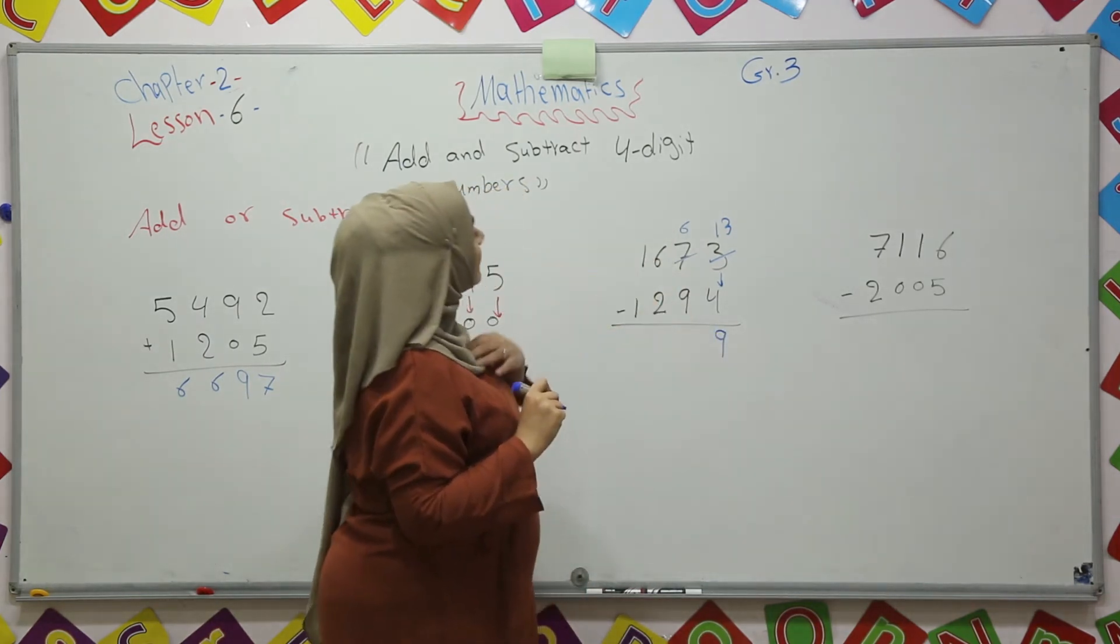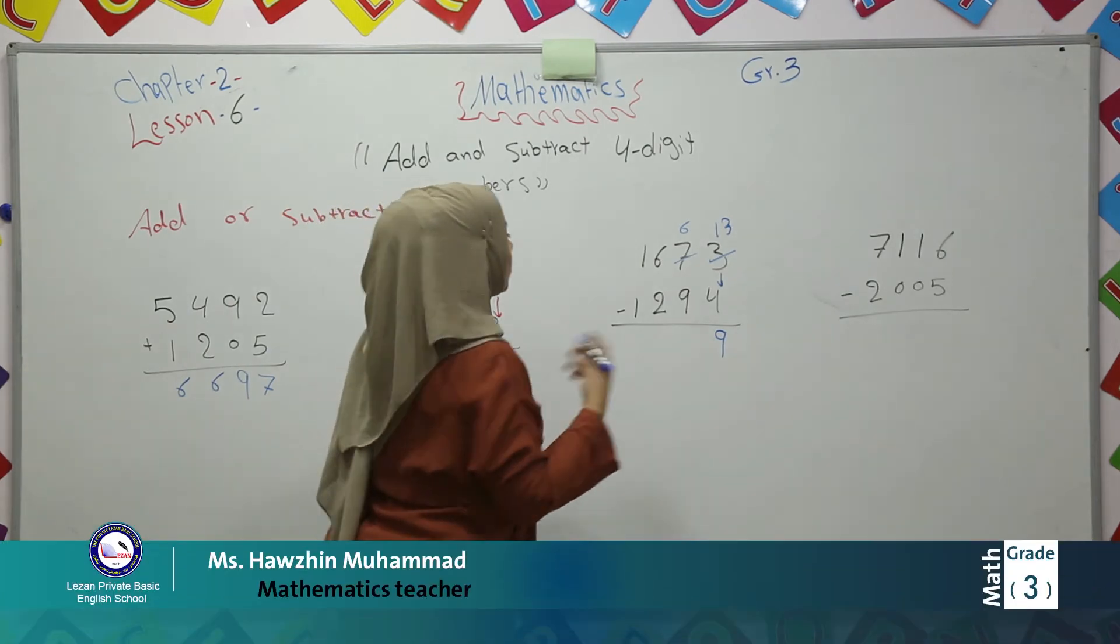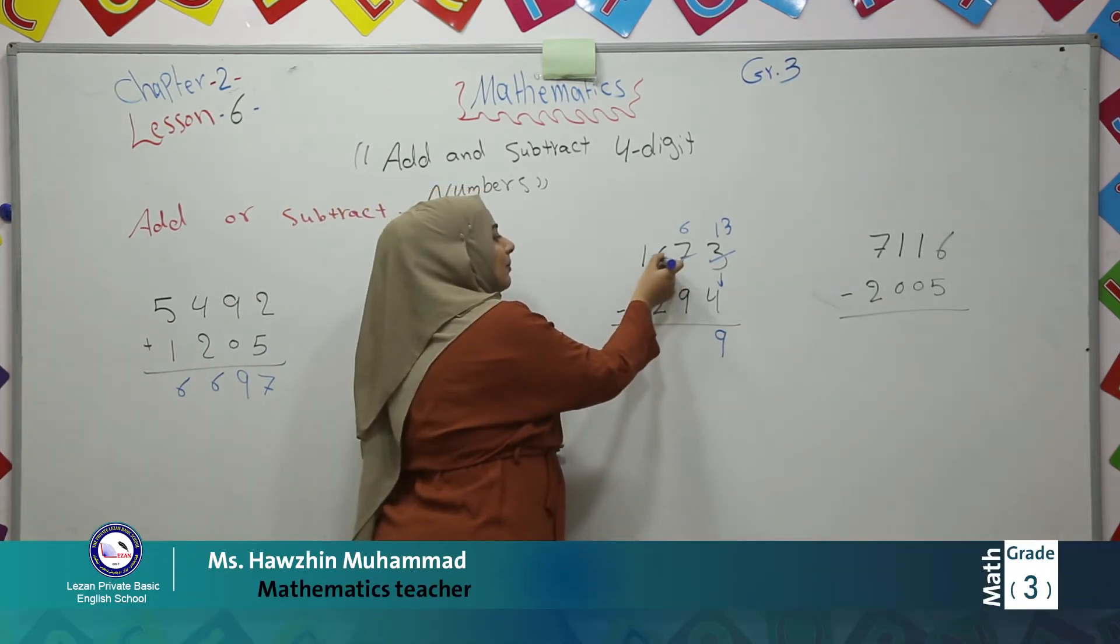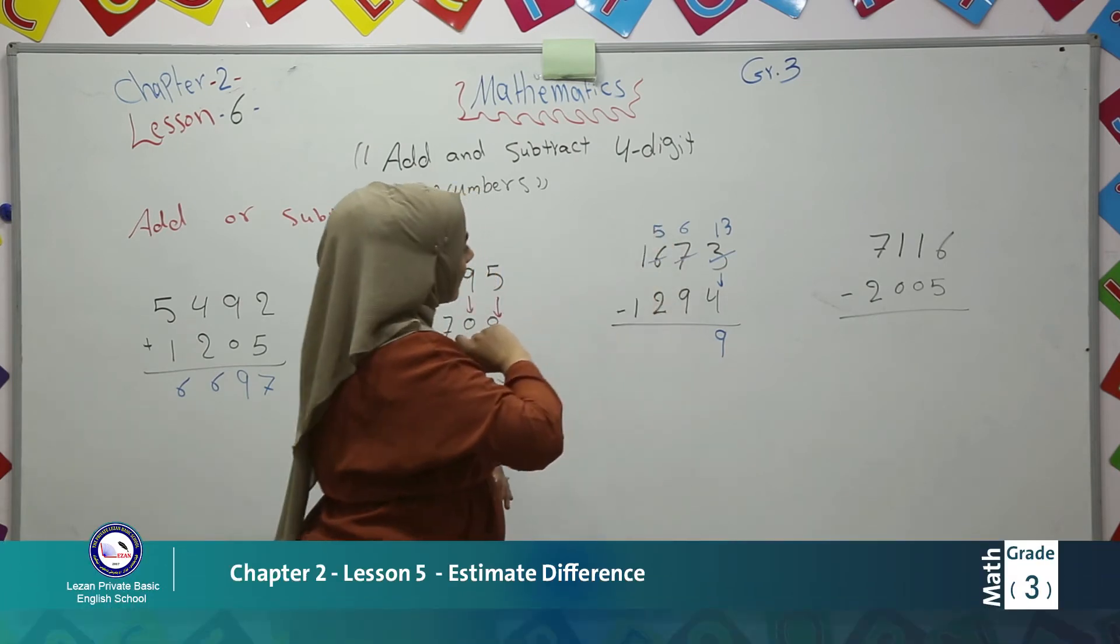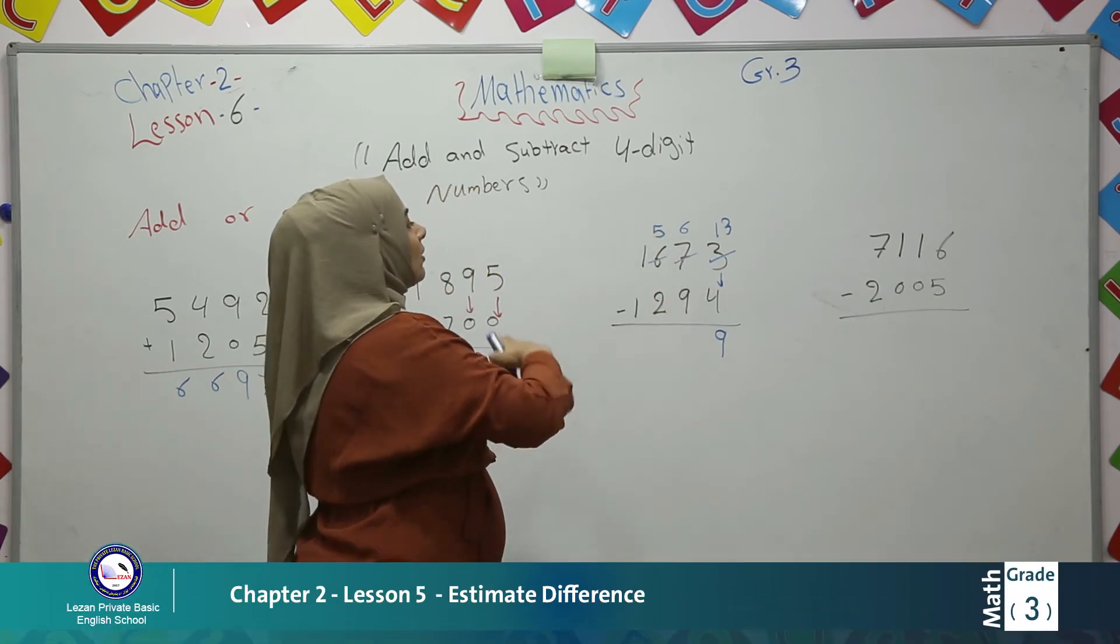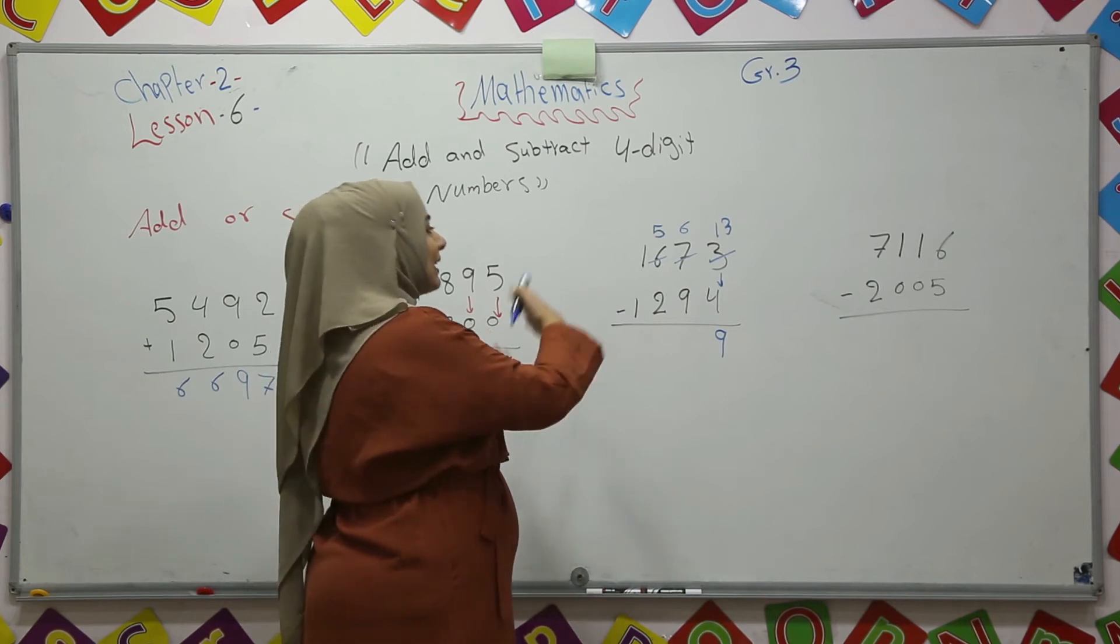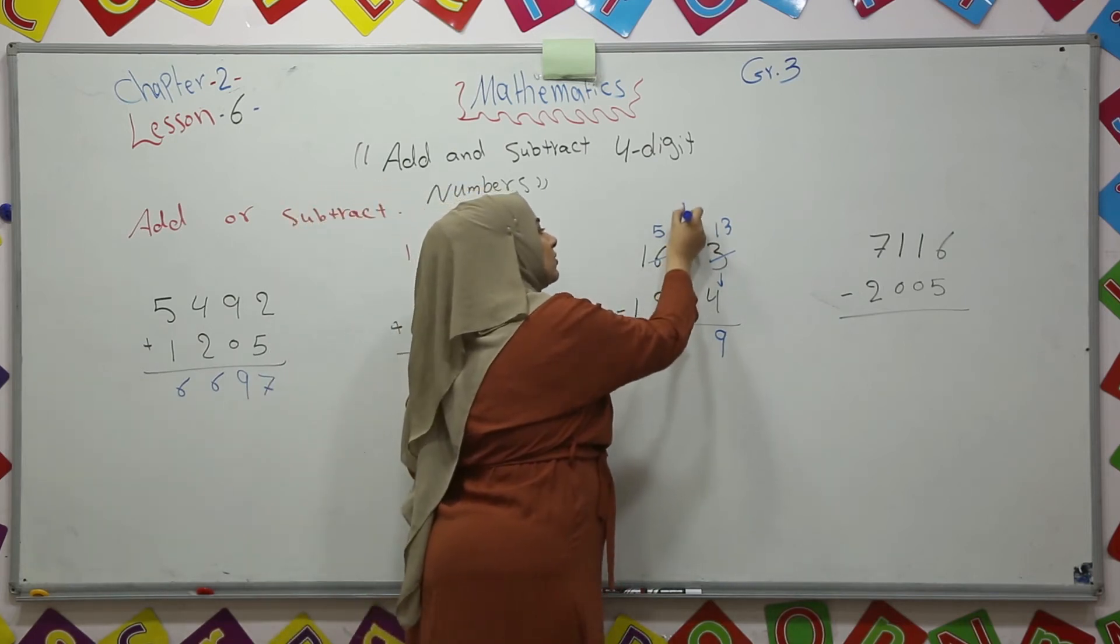Six minus nine. I can't do it. So I will break apart hundreds. It will be five hundred stay here. And I will break apart one hundred for ten tens. So the six will be sixteen.